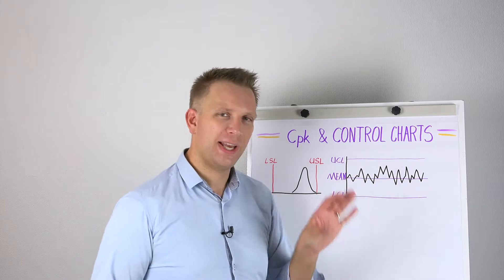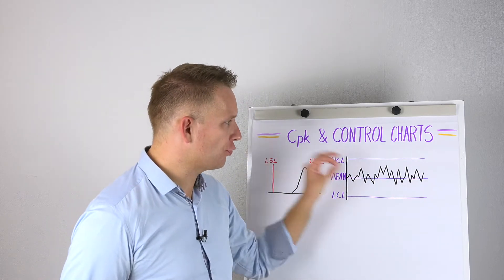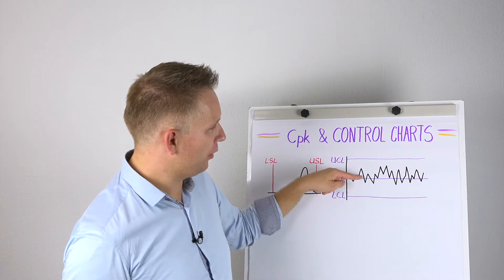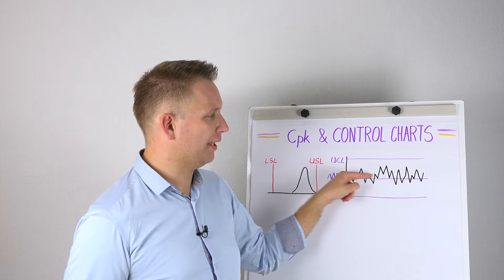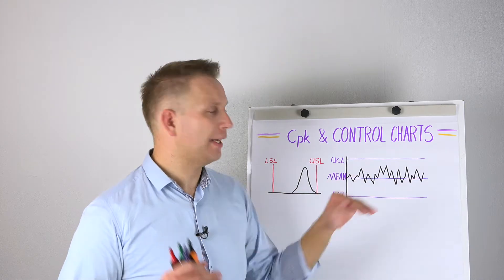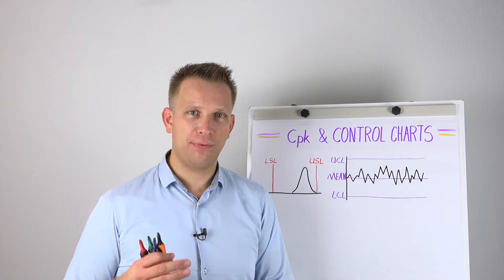So your process is not shifting. That is what your control chart will tell you. If at some point they go upwards, you know that they are no longer centered around the mean, they are going up or they are going down, and then your process is shifting.